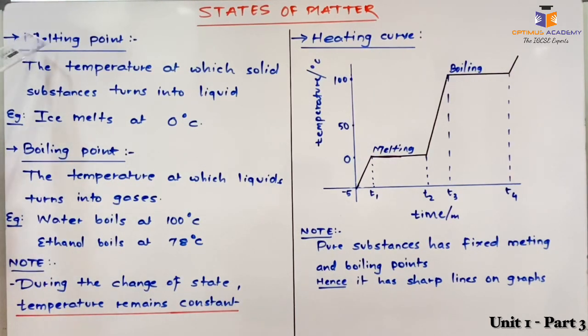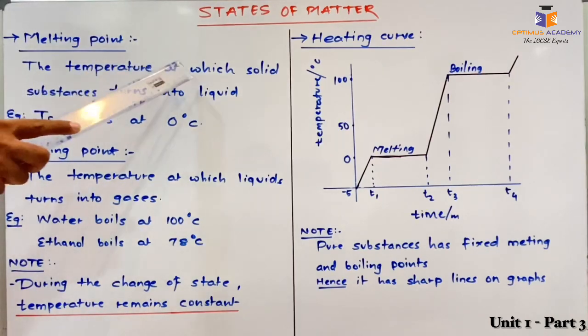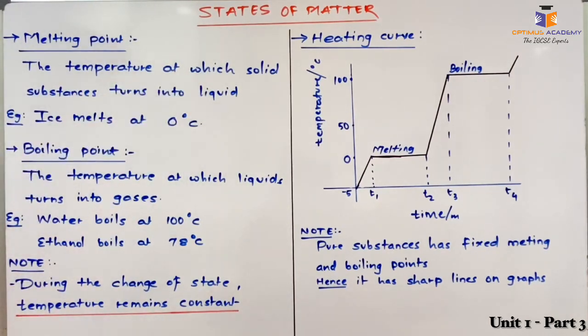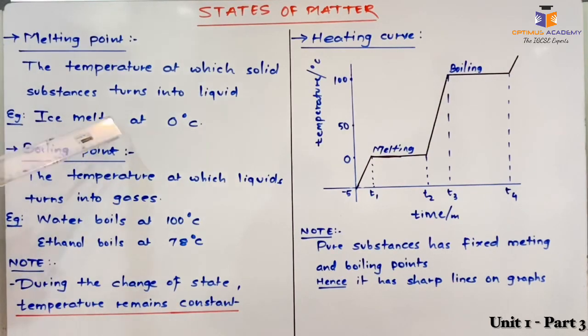What is melting point? It is the temperature at which a solid substance turns into liquid. For example, ice melts at 0 degrees Celsius.